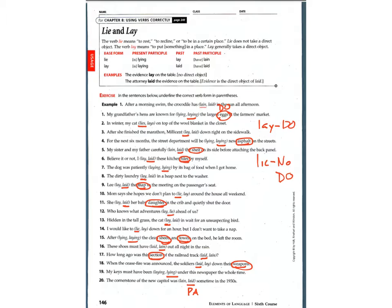And have lain is the past participle form. For lay, lay is the base form, laying is the present participle form, laid is the past, and have laid is the past participle form.